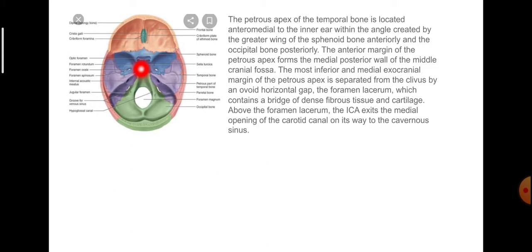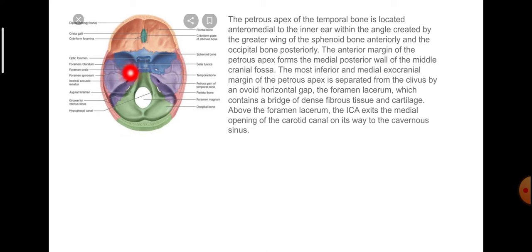Above the foramen lacerum, the internal carotid artery exits the medial opening of the carotid canal on its way to the cavernous sinus. The petrous apex of the temporal bone is located within the angle created by the greater wing of sphenoid and the occipital bone. The anterior margin forms the medial posterior wall of the middle cranial fossa, and the most inferior and medial exocranial margin is separated from the clivus by the foramen lacerum.